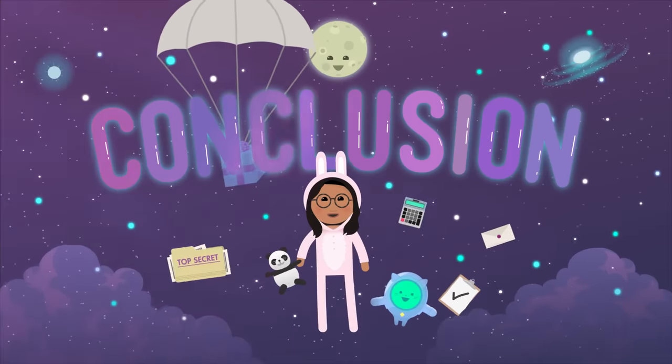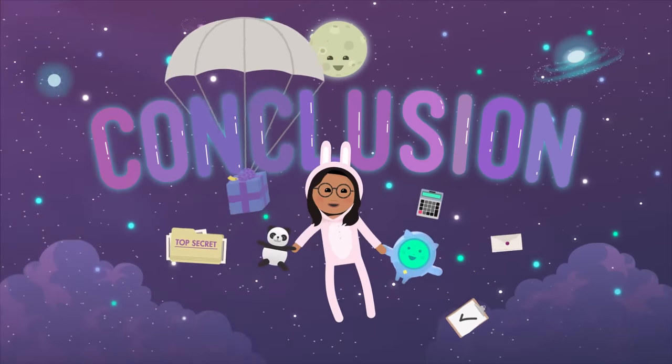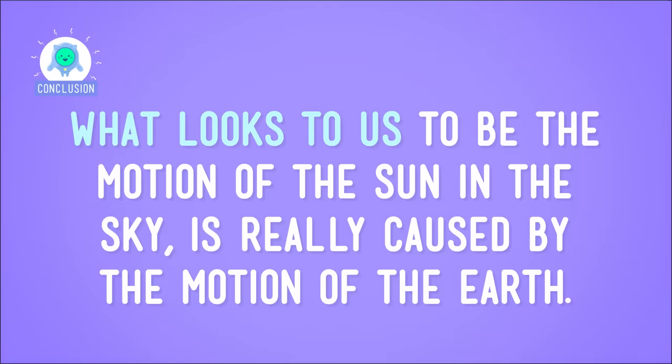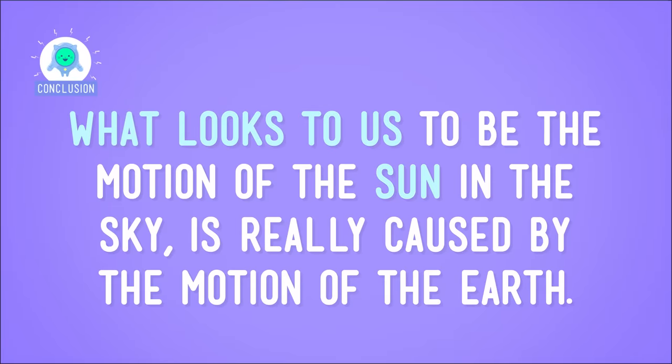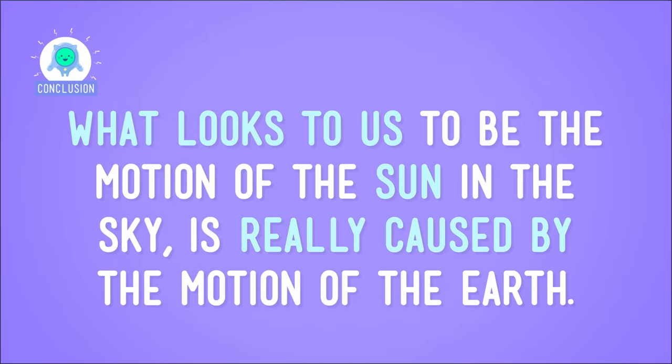So, do you notice how the Earth keeps rotating as it revolves around the sun? If this were the real sun and Earth, by the time you get back to where you started, the globe would have completed 365 rotations or days. And that's another year gone by. So, what does all this show us? It shows that what looks to us to be the motion of the sun in the sky is really caused by the motion of the Earth.